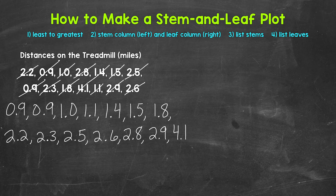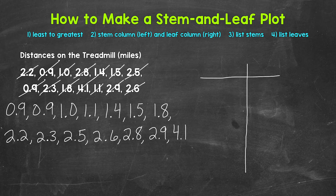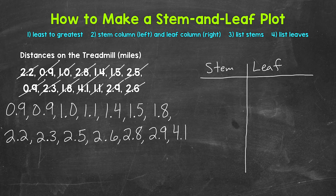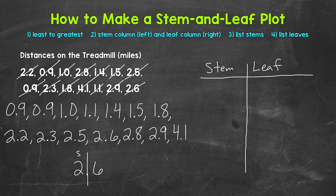Now that everything is in order, we need to create the stem and leaf plot. Let's draw out the stem side and the leaf side — a vertical line and then a horizontal line. The left column is the stem column and the right column is the leaf column. Looking at the data, everything has a ones digit and a tenths digit, and we range from nine tenths to four and one tenth. With stem and leaf plots, we split each value into a stem and a leaf. For example, take 2.6 — the ones digits are going to be the stems and the tenths digits are going to be the leaves.